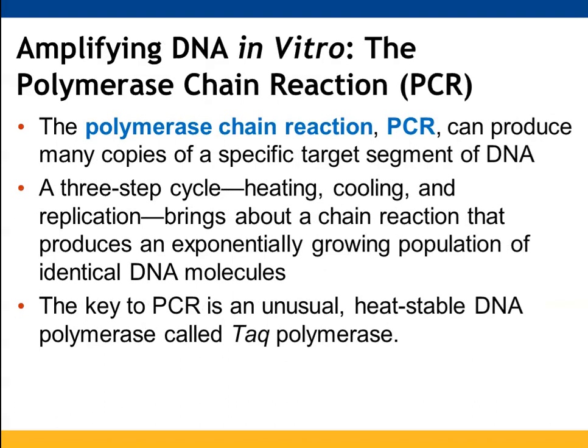Polymerase chain reaction, or PCR, allows you to make many copies of a specific target segment of DNA. You take your DNA segment, heat it to denature — separating the two strands by breaking the hydrogen bonds — then use primers to define the sequence to be copied. When the DNA cools down, the primers are placed so that the replication process can occur.